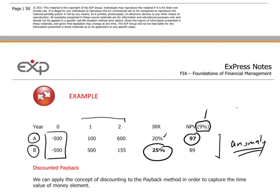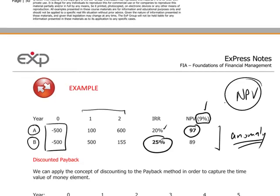The rule generally is that in the case of ambiguity, anomaly, or mixed conclusions, go with the NPV calculation.